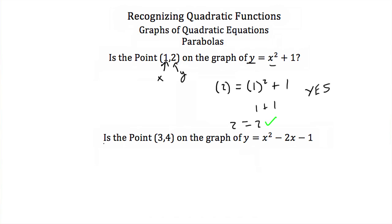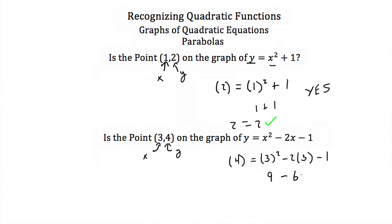Let's try our next example. Is the point (3, 4) on the graph of y is equal to x squared minus 2x minus 1? We're going to plug in 3 for x and 4 for y. We'll have 4 is equal to 3 squared minus 2 times 3 minus 1. Now 3 squared is 9; negative 2 times 3 is minus 6, and then minus 1. 9 minus 6 is 3, minus 1 again is 2, so we end up with 4 is equal to 2. That doesn't make any sense — 4 is not equal to 2. So no, the point (3, 4) is not on the graph of y is equal to x squared minus 2x minus 1.